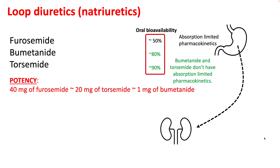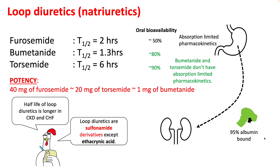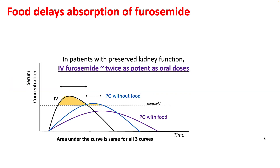The oral bioavailability of furosemide is the least, around 50 to 60 percent, while bumetanide and torsemide do not have absorption-limited pharmacokinetics. All three are highly protein-bound — around 90 to 95 percent of these drugs are bound to albumin for transport to the kidneys. The half-life of furosemide is two hours and torsemide is around six hours. The half-life of loop diuretics is longer in CKD and heart failure. These are sulfonamide derivatives, except ethacrynic acid, which is selectively used for patients with a serious reaction to sulfa drugs.